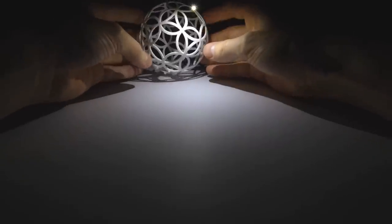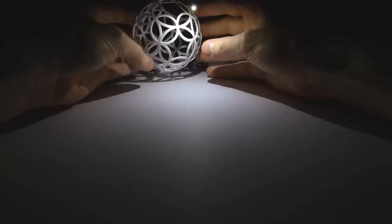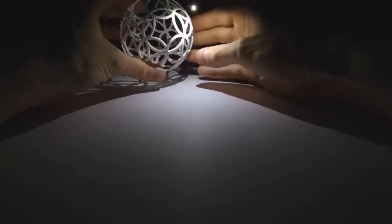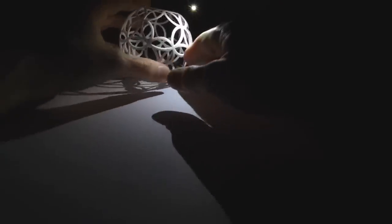So this is a design based on the dodecahedron and the icosahedron. There are 12 big circles and 20 small circles. Some of them are a little bit cut off at the top which is where the light's going to go.